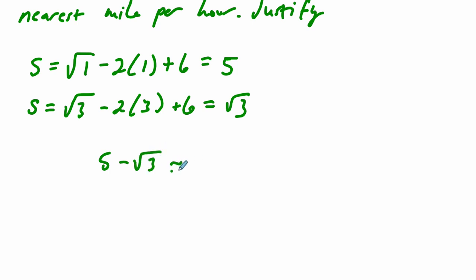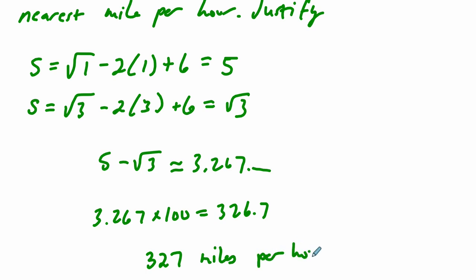And we want to find the difference of these two things. So 5 minus the square root of 3, it's about 3.267, and it keeps going. But the answer is not that. This is in hundreds of miles per hour. They want to the nearest mile per hour. So take about 3.267 times 100, and I get 326.7, or to the nearest mile per hour, 327 miles per hour. And that's it. We justified our reasoning. We've showed our work. We are done. Thank you.